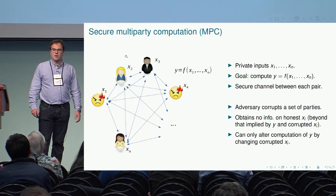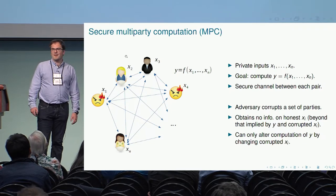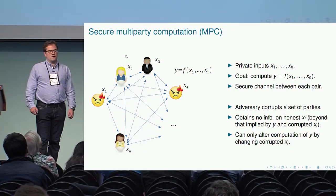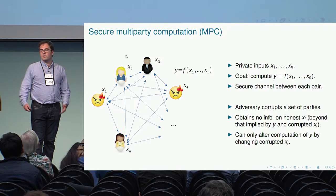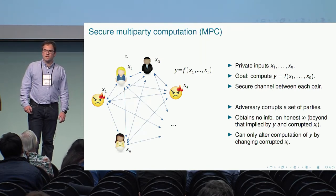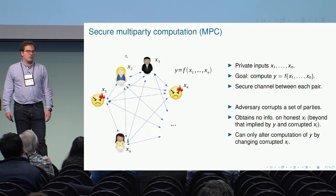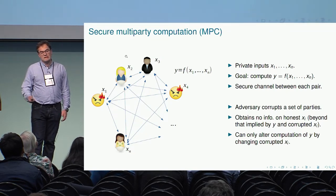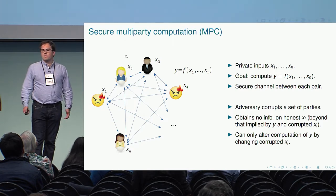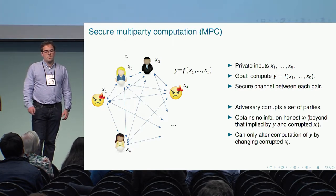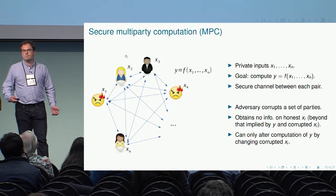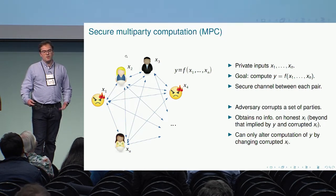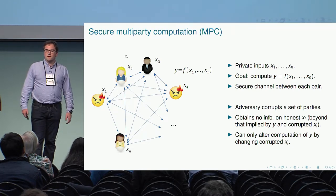To fix notation: we have n parties, each with private inputs, and they want to compute some function through a protocol where they communicate with each other. They have secure channels between each pair of parties. Security is captured by the notion of an adversary that corrupts some subsets of parties—it should not get information on the inputs of uncorrupted parties beyond what is implied by the output and the corrupted inputs. Furthermore, it cannot alter the computation of the function except by changing the corrupted inputs.